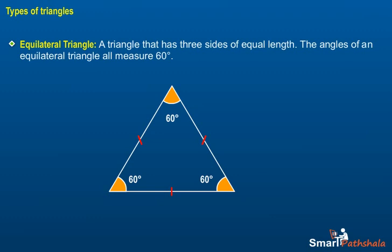Types of Triangles. Equilateral Triangle. A triangle that has three sides of equal length. The angles of an equilateral triangle all measure 60 degrees.